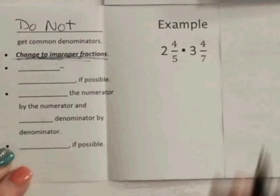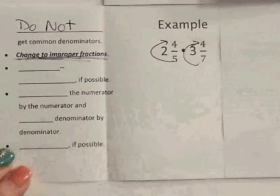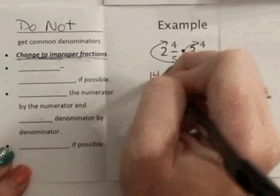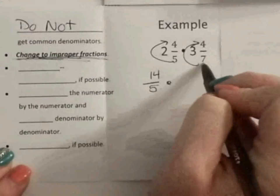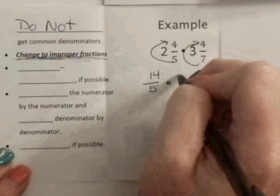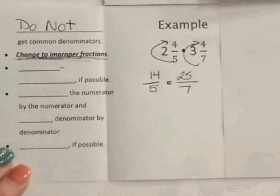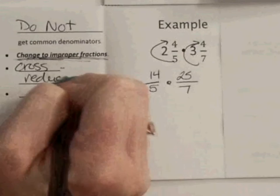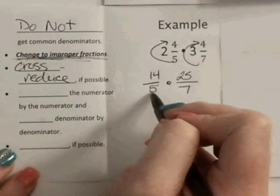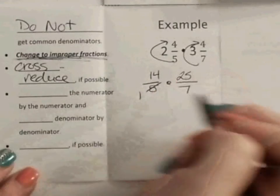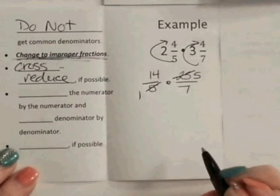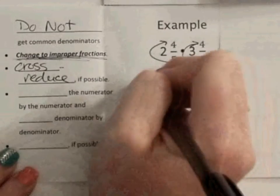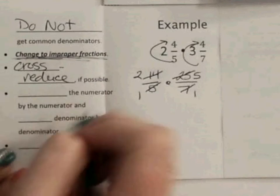So, we are going to use around the world, just like we did on the lesson before this. 5 times 2 is 10, plus 4 is 14 fifths, times 3 times 7 is 21, plus 4 is 25 sevenths. So, now, I'm going to cross-reduce, if possible. So, I look and see, I know that 5 and 25 share a 5. So, 5 goes into 5 one time, 5 goes into 25 five times. Again, 7 and 14 share a 7. 7 goes into 7 once, 7 goes into 14 twice.